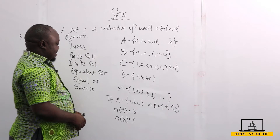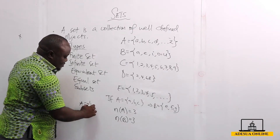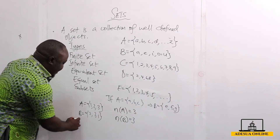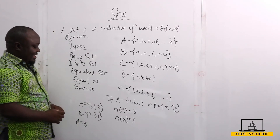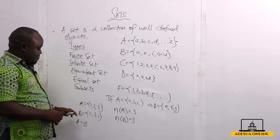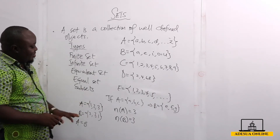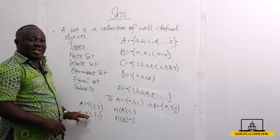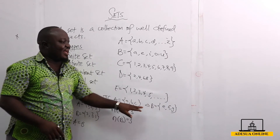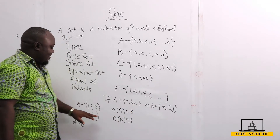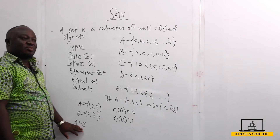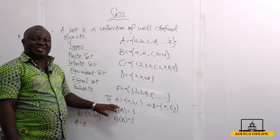Now when we talk about equal sets, if I have a set A equal to 1, 2, and 3, and a set B equal to 2, 3, and 1 — A is equal to B because the number of elements and the members are the same. We can also say that an equal set is an equivalent set, but an equivalent set is not necessarily an equal set. Because in equivalent sets the number of elements is the same but the members are not the same, while in equal sets both the number of elements and the members are the same.